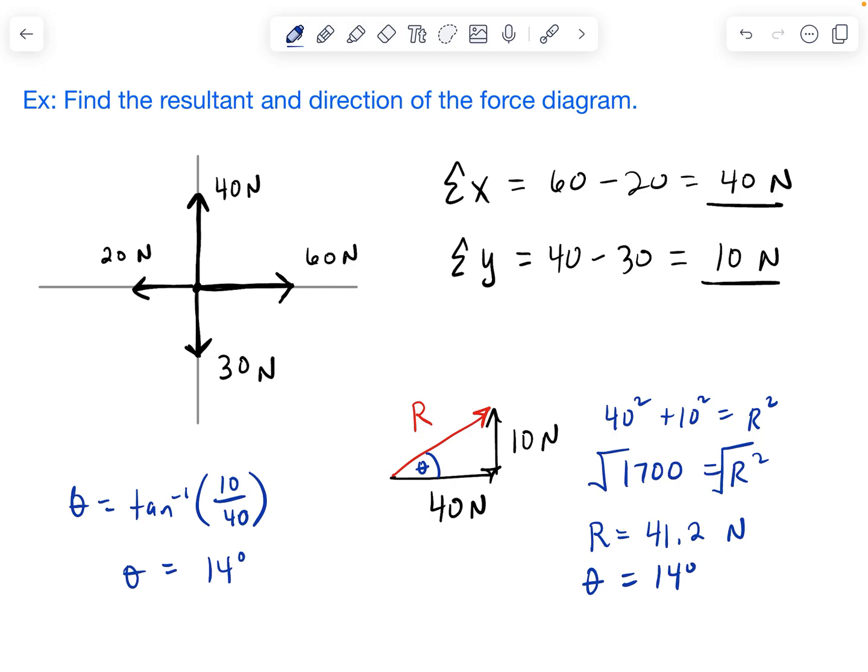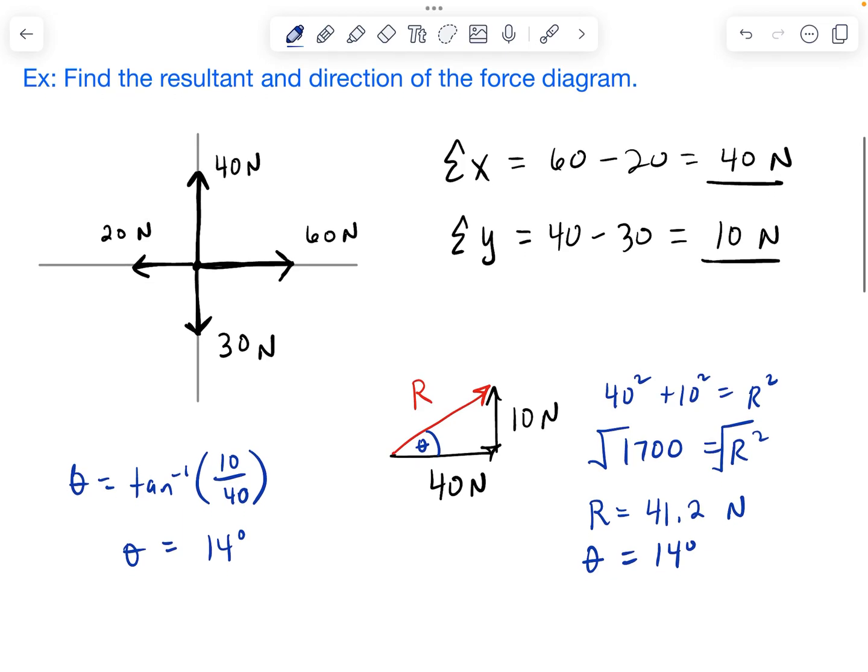And this would be considered north of east. So this is east. And then we went north of it by 14 degrees. So that is my final answer. 41.2 newtons at an angle of 14 degrees north of east.